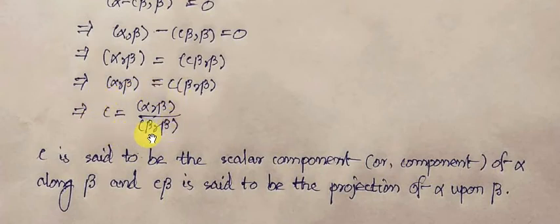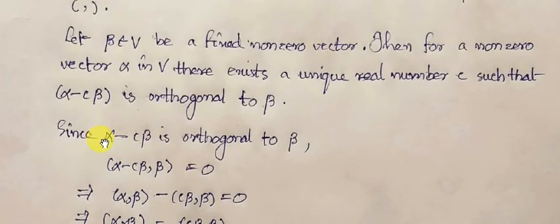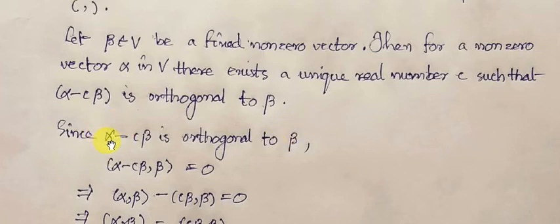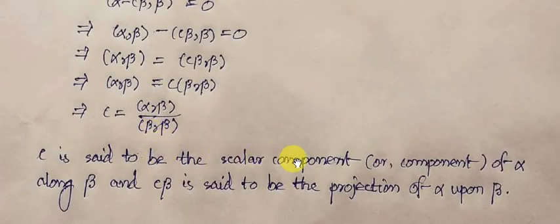This is the procedure for calculating scalar C, for which the vector alpha minus C*beta is orthogonal to the fixed vector beta. C is called the scalar component, or component, of alpha along beta.